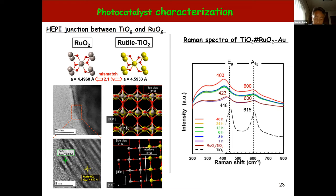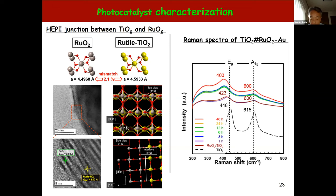The right figure shows Raman spectra for samples prepared at various hydrothermal reaction times. TiO2 has two signals due to the Eg and A1g modes at 448 and 615 reciprocal cm respectively. Interestingly, a significant redshift in the Eg mode is caused by the heteroepitaxial growth of ruthenium oxide on TiO2.